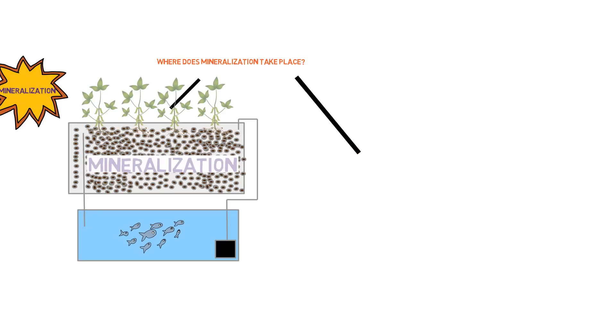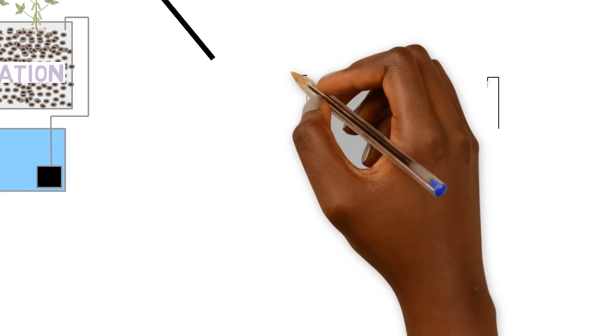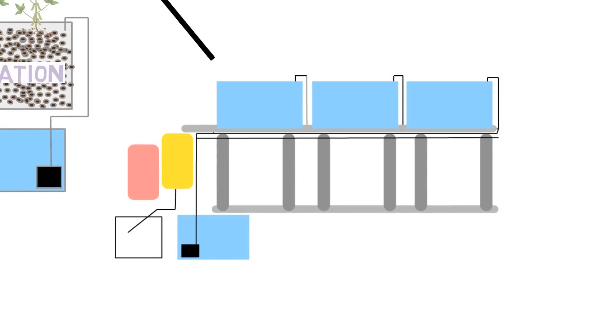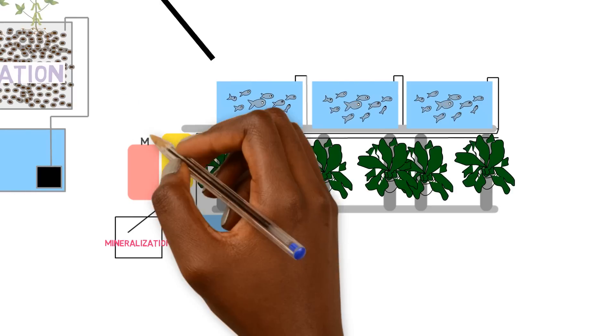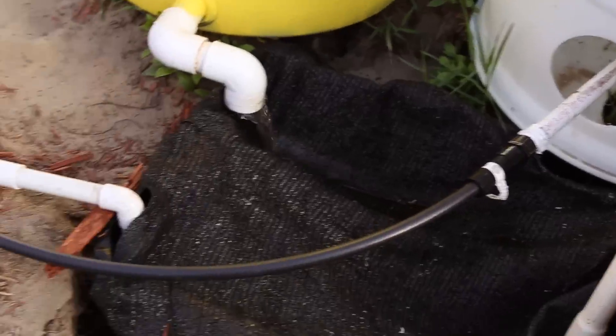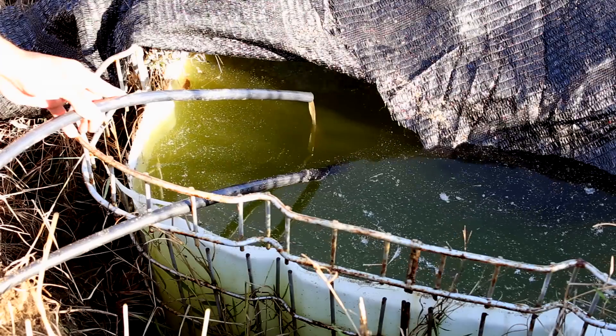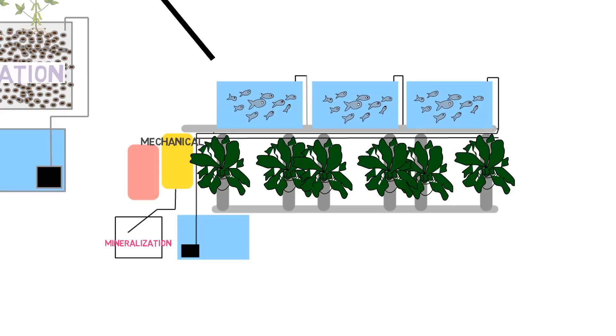Well, on the other spectrum, which is what we typically use, is a separate mineralization tank, totally separate from the system. It connects from the mechanical filter where the solid waste that is accumulated gets drained into its own separate tank and it's totally outside of the recirculating system that we have. And it's just doing its own thing and functioning separately from the rest of the system.